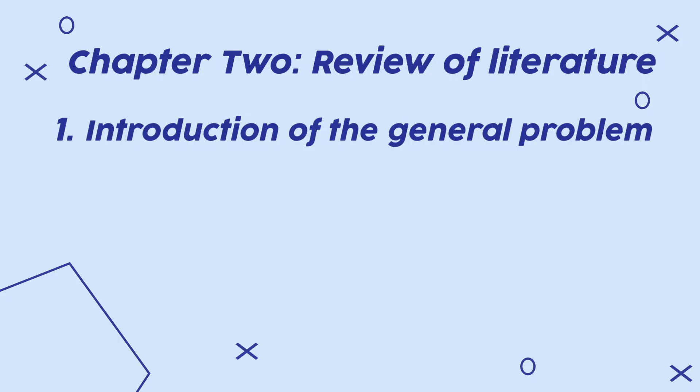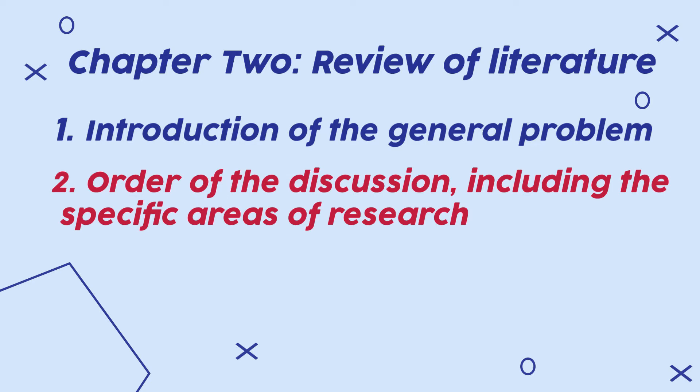In the literature review chapter, you are showing your supervisor and other readers that your topic was developed because there was a need to fill a specific research gap. The main components of Chapter 2 include an introduction of the general problem and the order of discussion. For example, for a psychology student evaluating cognitive behavioral therapy among teenagers with eating disorders, specific areas would include: 1. prevalence and causes of eating disorders, 2. negative health outcomes associated with eating disorders, and 3. various psychological strategies used in treating eating disorders among teenagers.